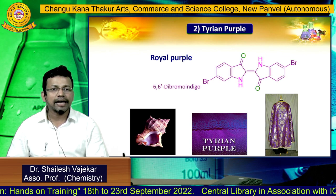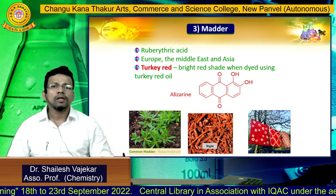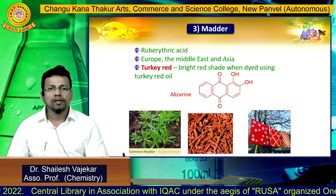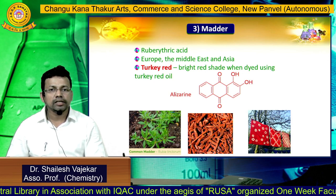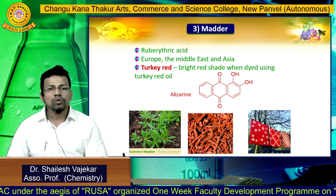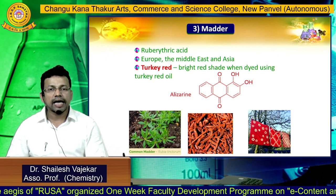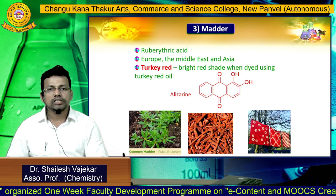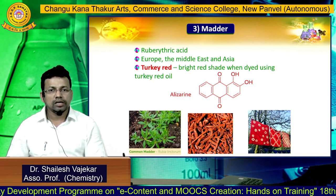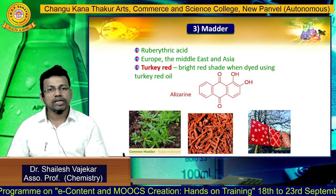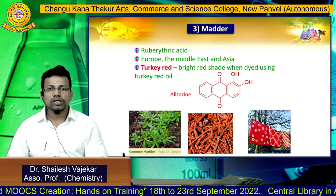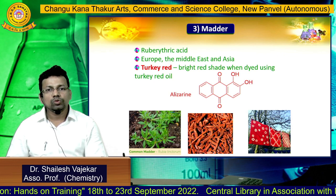We have shown two pictures of fabric dyed with Tyrian purple or royal purple. The third natural dye is madder. The madder dye is obtained from the roots of the madder plant — you can see a picture of the roots at the center. Initially the roots give us ruberythric acid, a glycoside which on hydrolysis gives sugar and bases. The active component giving the color is alizarin, which is 1,2-dihydroxyanthraquinone, and it gives a very bright red shade.